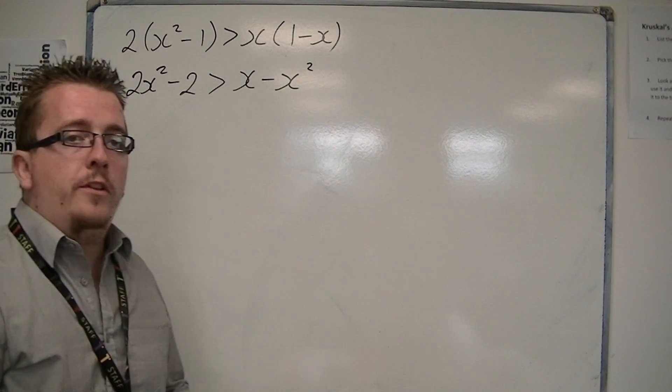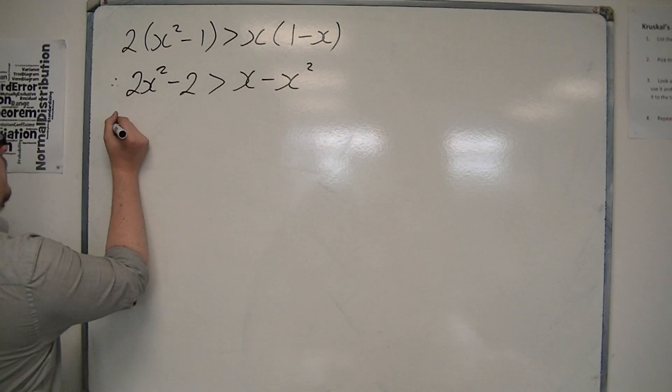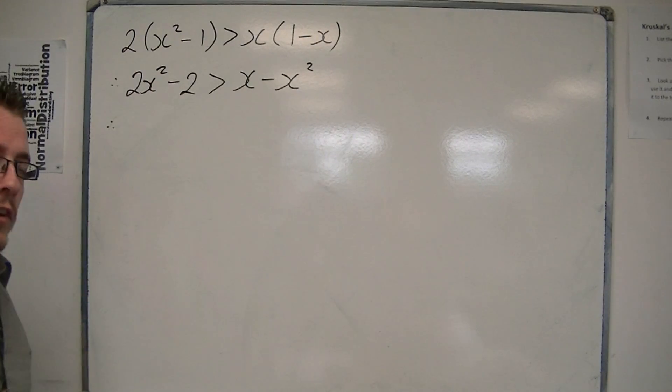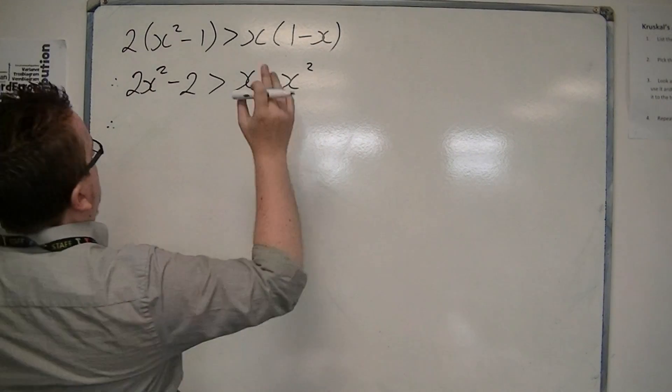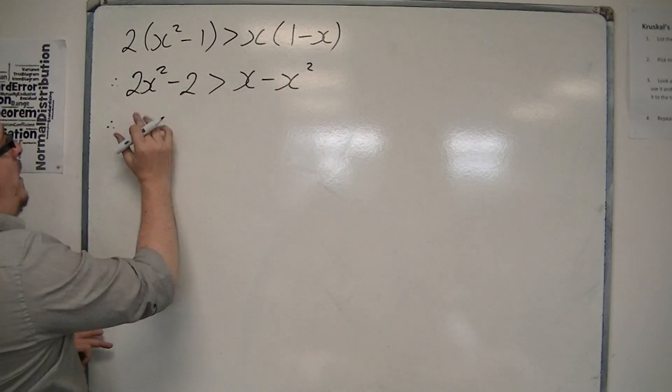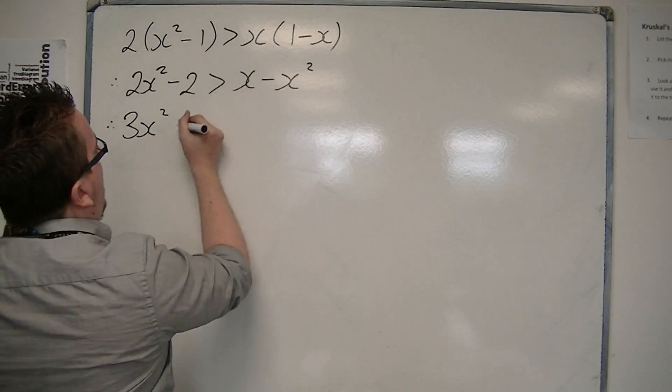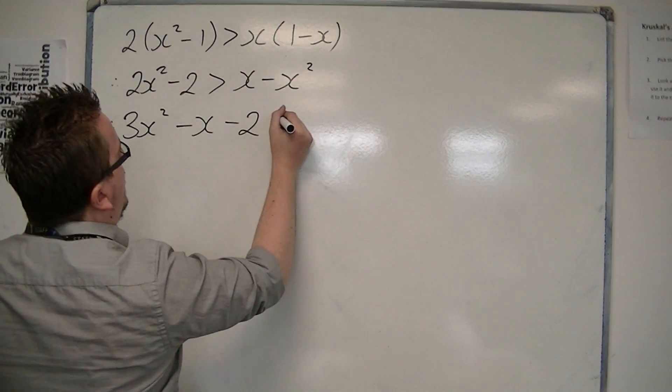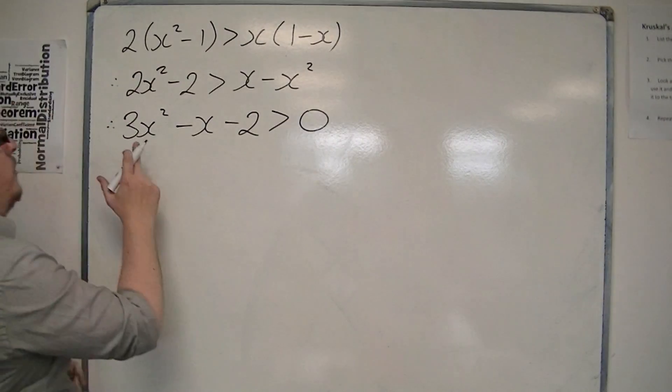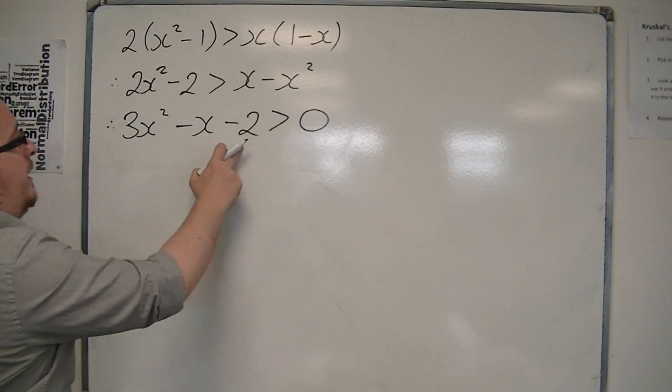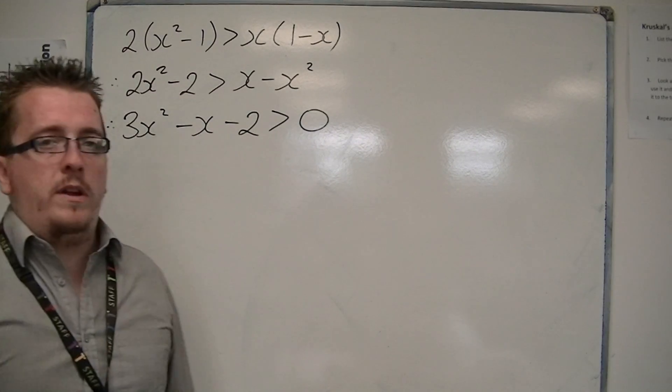Then I'm going to throw everything onto the left-hand side of the inequality. I'm going to add x² to both sides and take x from both sides, and that -2 is still there. So I've now got 3x² - x - 2 > 0.